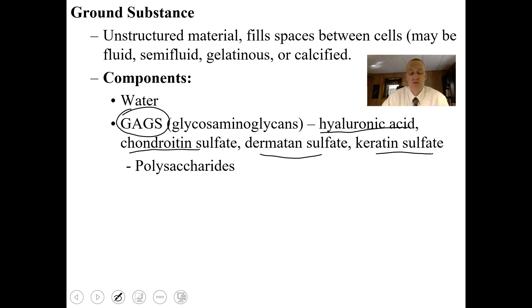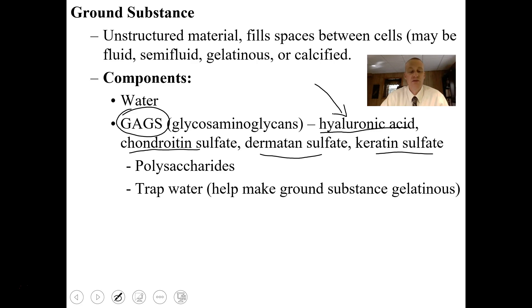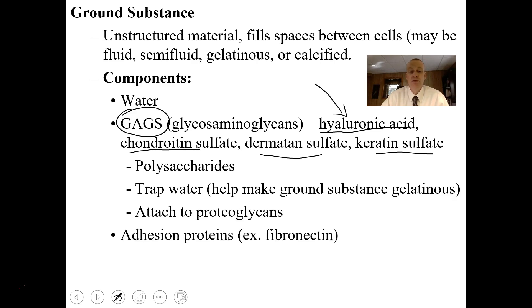These materials are polysaccharides — they're sugars. One of the components of snake venoms is hyaluronidase, an enzyme that digests hyaluronic acid. When some of these snakes bite you and inject venom, they're basically digesting the ground substance, which holds together some of the tissue components. These GAGs trap water, which helps to make the ground substance more gelatinous. They attach to proteoglycans, which helps to make a matrix and give the ground substance structure.